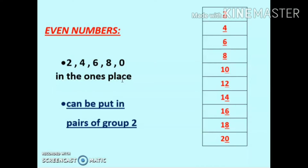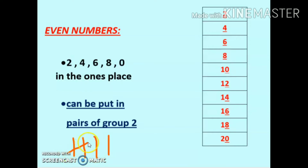Another way to identify an even number: if a number can be put in pairs of groups of 2, then it is called an even number. Suppose we have the number 4 — 1, 2, 3, 4 — and we pair them into groups of 2. Nothing is left over, so it is an even number.